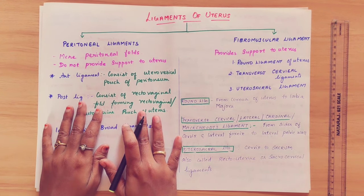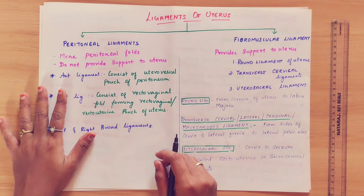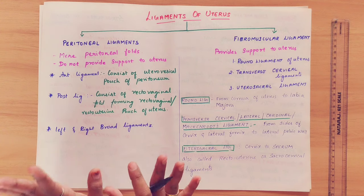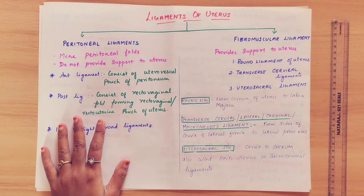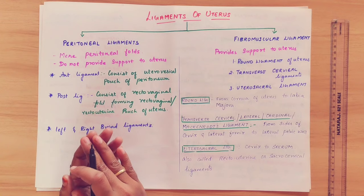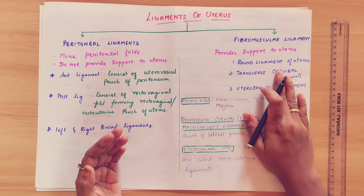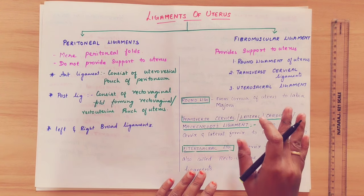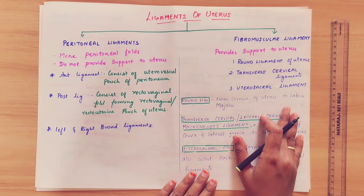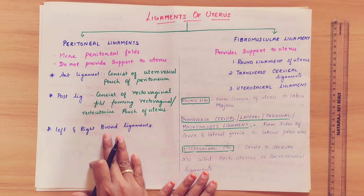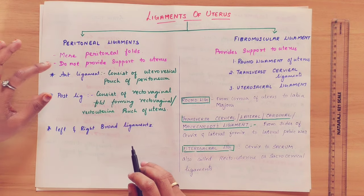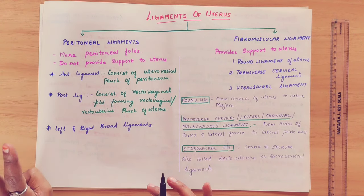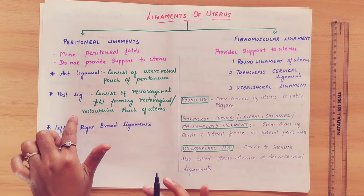Peritoneal ligaments are merely peritoneal folds — they are fully made of the peritoneum. They do not provide structural support to the uterus. The fibromuscular ligaments, on the other hand, are what support the uterus and help hold it in position. Peritoneal ligaments are of three types in relation to the uterus.